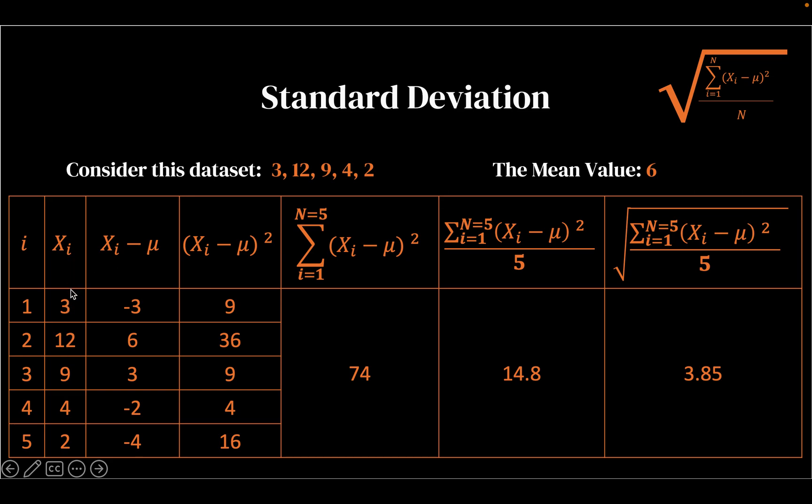So consider this column as our data set in its entirety, the population 3, 12, 9, 4, 2. We've got five values in the data set. We know what the mean of these values is, which is six. We could always add them and divide them by five, because these are five values to calculate the mean.